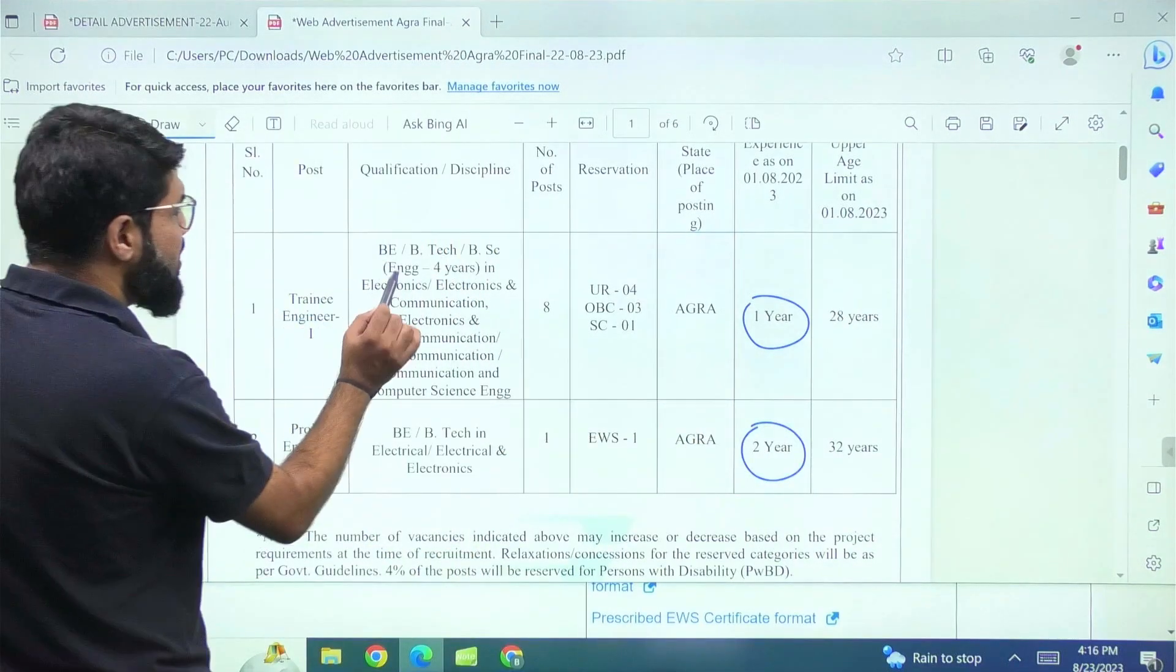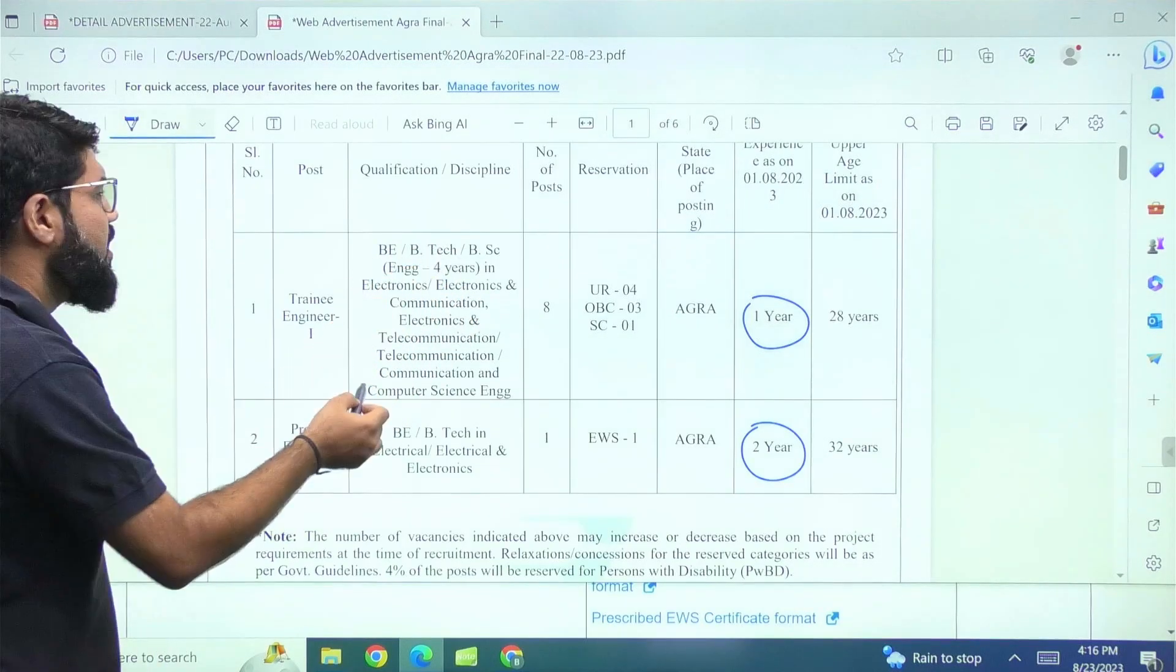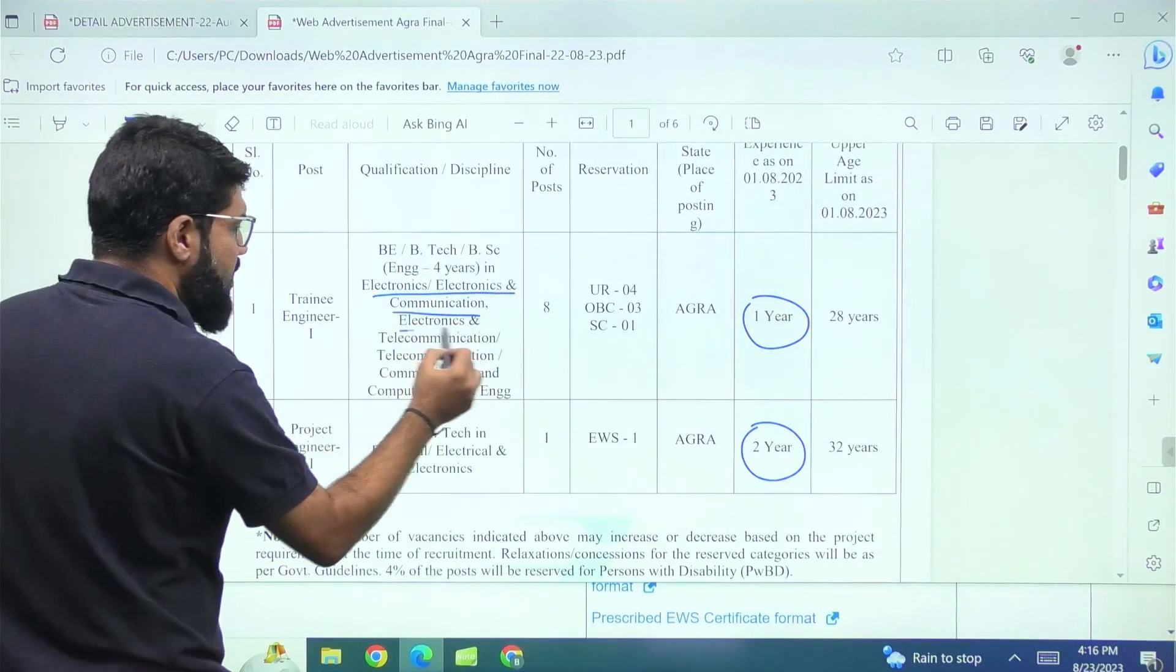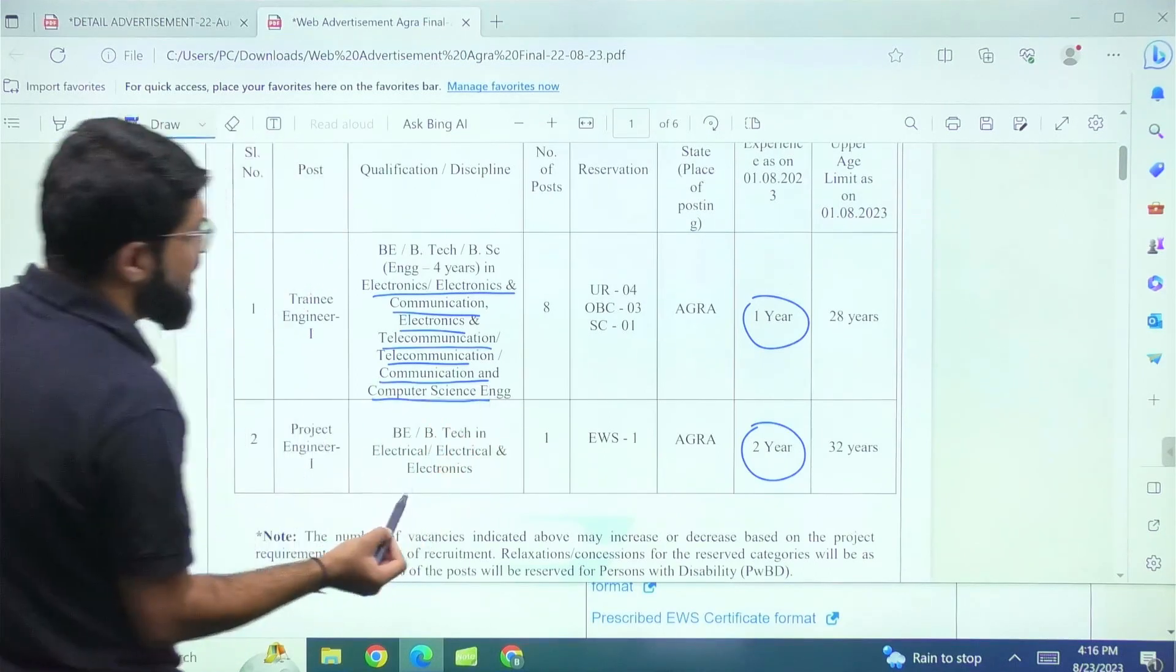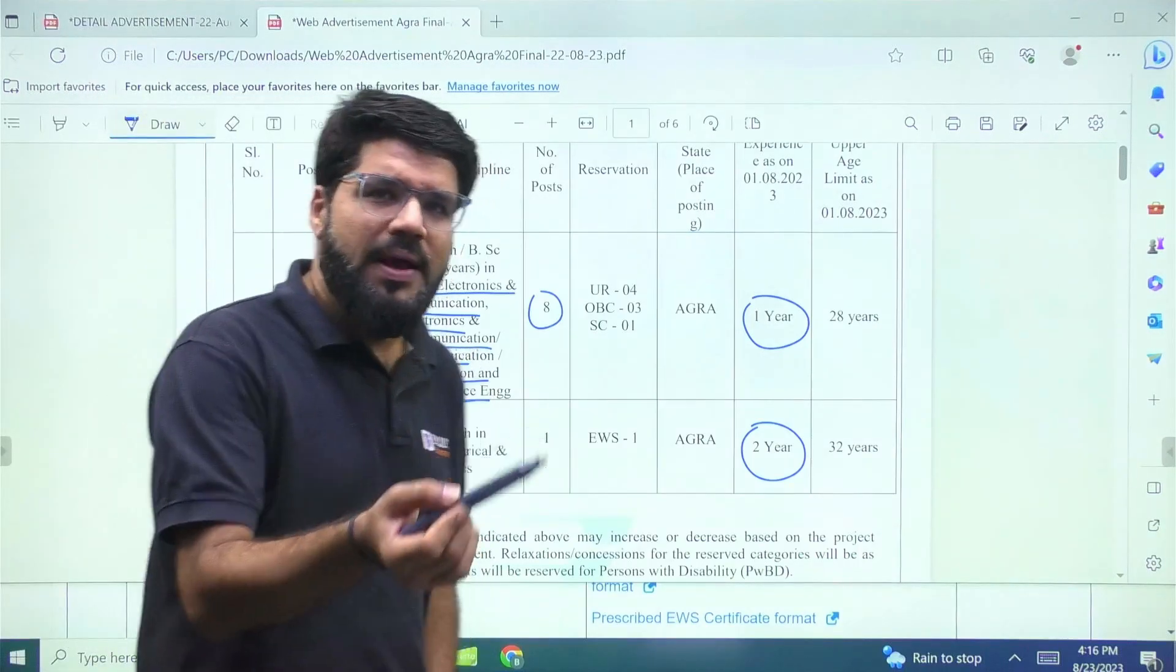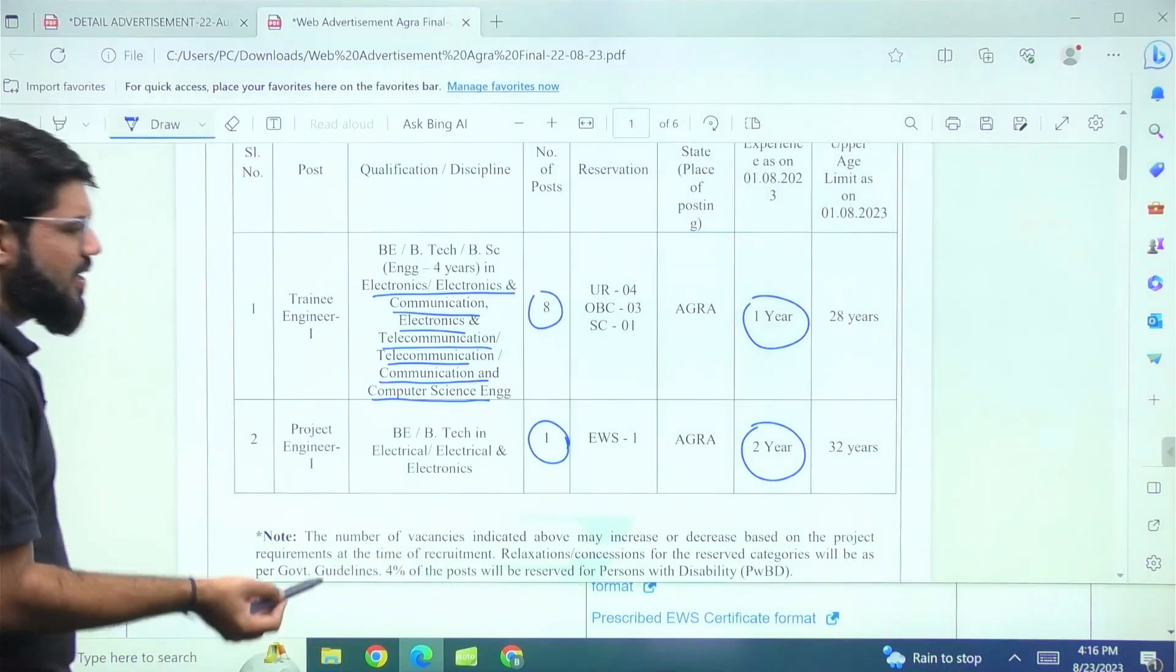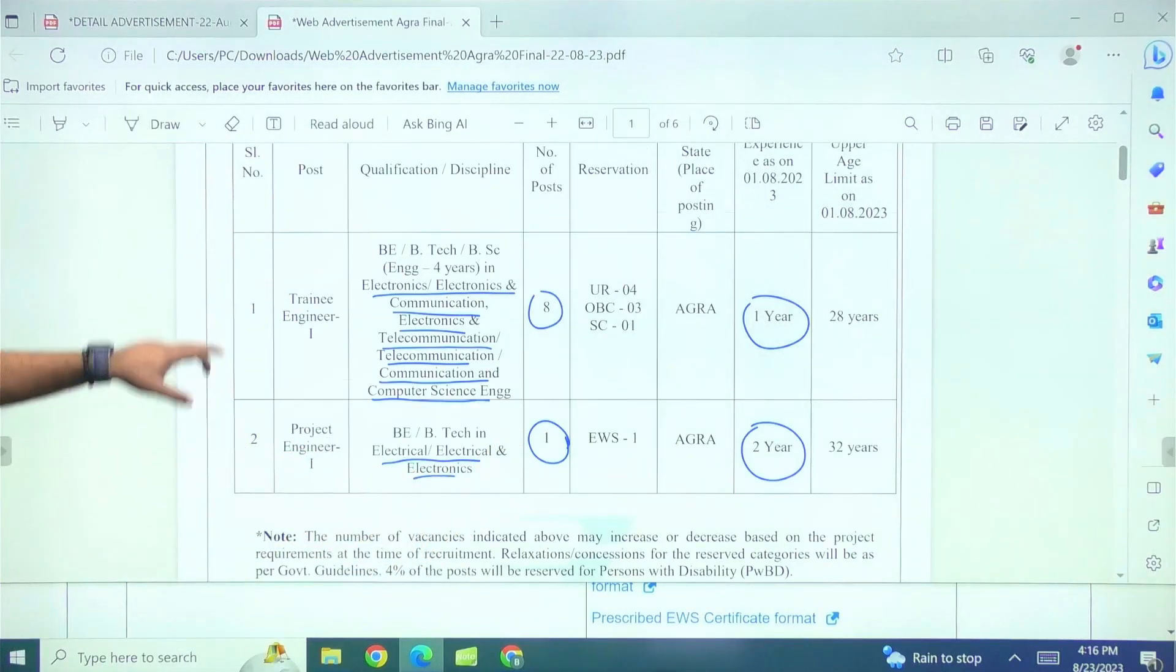Now how many vacancies are there? Any BE, B.Tech, B.Sc for four years, they can apply electronics, electronics and communication, electronics and telecommunication, telecommunication, communication and computer science engineering total only eight number of posts. But since this is again related to BEL, so I added on to this as well for project engineer, there is just one vacancy that is for electrical electronics students.